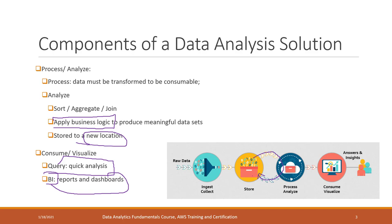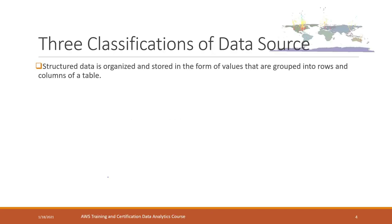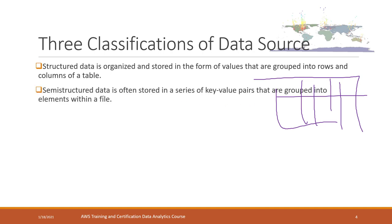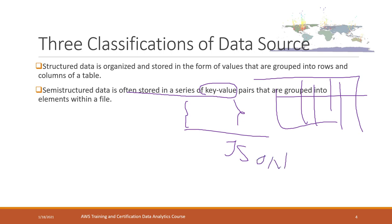Let's review the three types of data resources. First, structured data — the data is organized in tables with columns and rows. Second, semi-structured data — stored in key-value pairs, something like a dictionary or JSON data. Third, unstructured data — data that is not structured in any consistent way, such as text messages, videos, audios, etc.